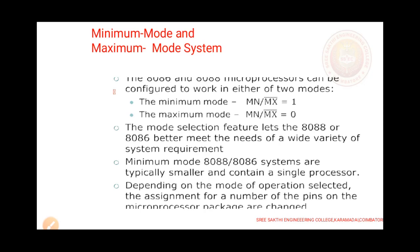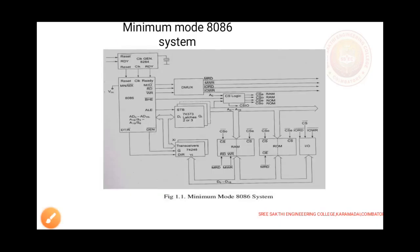In minimum mode, you can use only one processor. In maximum mode, you can use many processors. For selecting minimum mode of the 8086 processor, you have to put one at the minimum and maximum pin, which means you have to connect VCC to the minimum and maximum pin of the 8086 processor.